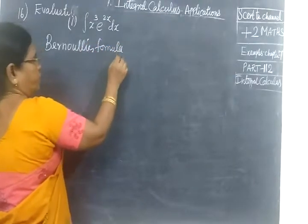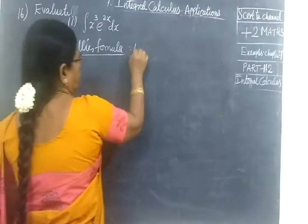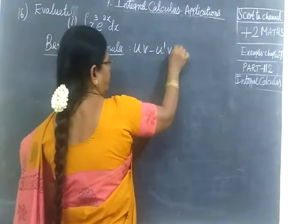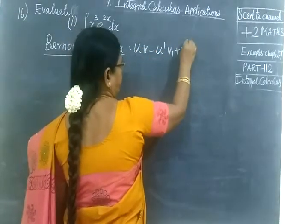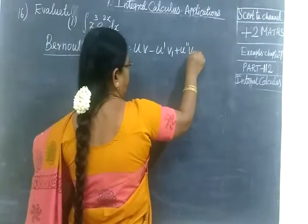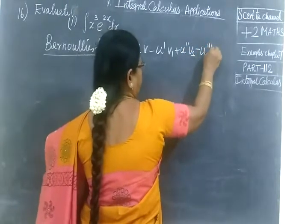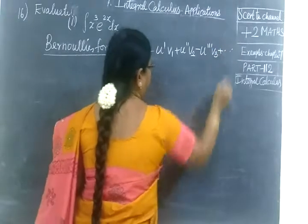The Bernoulli formula is: U times V minus U' times V1 plus U'' times V2 minus U''' times V3, and so on with alternating signs.